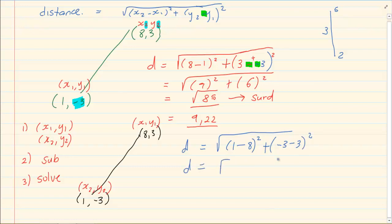So we've got d is equal to the root of negative seven all squared, plus negative six all squared. If you press it into your calculator, you will get the same answer. So it does not matter which one you make (x1, y1), and which one you make (x2, y2).